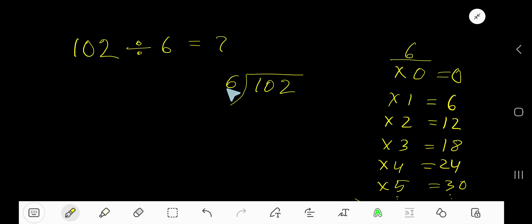102 divided by 6. Here 6 is the divisor, so we need the multiplication table of 6: 6 times 0 is 0, 6 times 1 is 6, 6 times 2 is 12, 6 times 3 is 18, 6 times 4 is 24, 6 times 5 is 30.